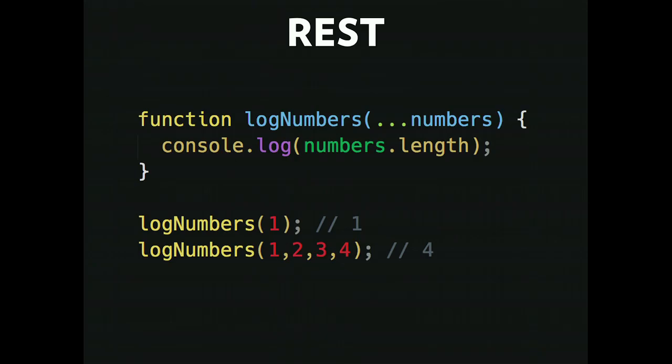Rest parameters allow you to pass in an unspecified amount of parameters, using this little ellipsis in the parameter. In ES6, rest parameters are actually an array, which is how I'm checking length. When I console log 'numbers.length', I'm checking that array. If I pass in just one, I get 1. If I log numbers with 1, 2, 3, 4 — I get 4.